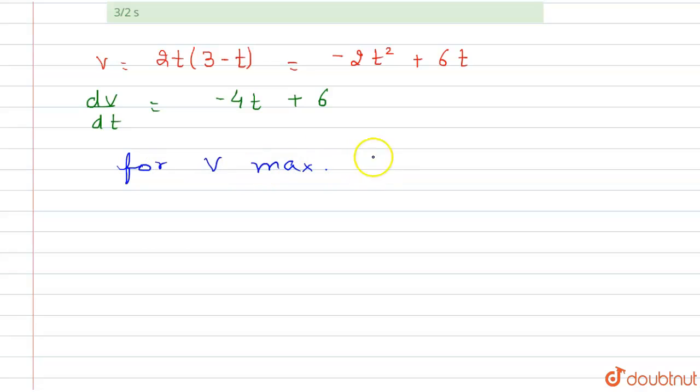For v maximum or minimum, we find dv/dt equals 0. If dv/dt equals 0, then we get t equals 3/2 seconds.